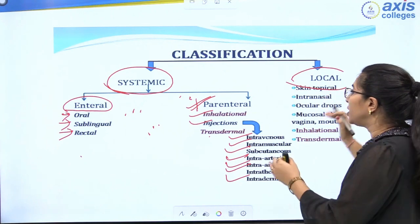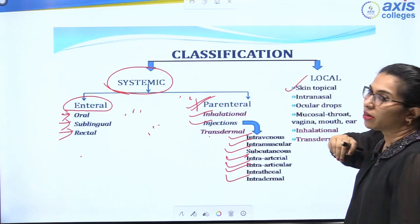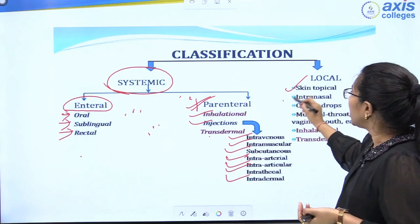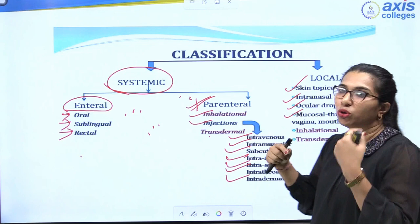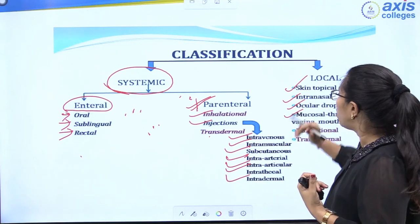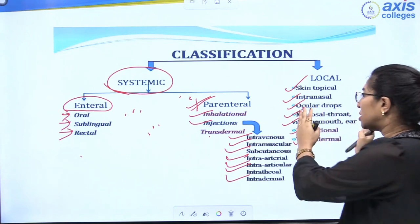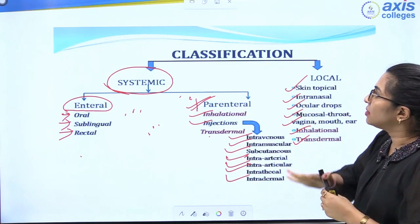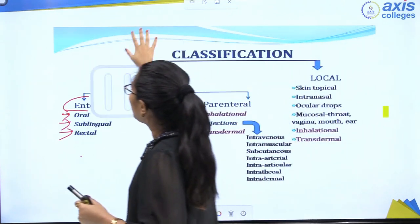The local route is applied on the upper surface of the body — for example, applying ointment or cream on the skin. Intranasal means through the nose using drops or sprays. Ocular includes eye drops, eye ointments, contact lenses, implants, and inserts. Mucosal involves applying ointment inside the mouth for ulcers or sores. The local route also includes drugs applied to the vagina, ear, and through inhalation or transdermal patches.